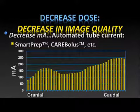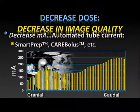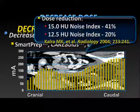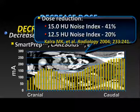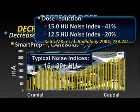When we approach these problems, we need to be very careful and make sure we don't go too low. Automatic mA adjustment — smart prep or care bolus — automatically adjusts the mA based on the body part being scanned. Dr. Kalra has shown very nicely that if we apply that technology, we can clearly decrease dose based on the specific noise indexes that you choose. Most of us are applying that technology in our practices.